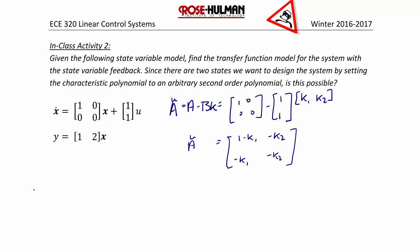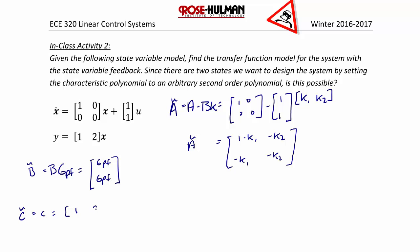Next we find B-tilde. B-tilde is equal to B times GPF, which equals GPF. C-tilde, once again, is equal to C, which is [1, 2].